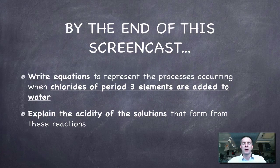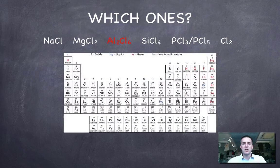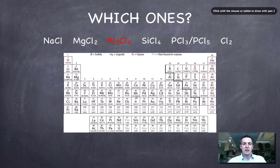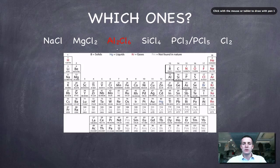By the end of this film we can write some equations to represent these reactions and also use these equations to explain why the solutions that form will be acidic. First of all, let's remind ourselves of what substances we're talking about here: sodium chloride, magnesium chloride, and aluminium chloride, all of which you'd expect to be ionic. We've got silicon tetrachloride, phosphorus trichloride, phosphorus pentachloride, and chlorine. These guys here are all covalent molecules.